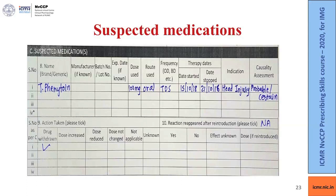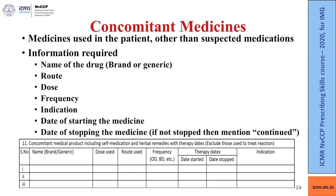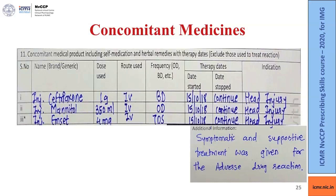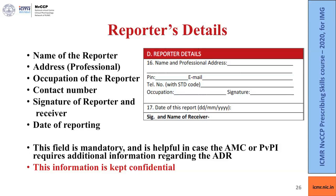Concomitant medicines are those used in the patient other than the suspected medicines. The information required for concomitant medicines is the same as for suspected medicines: name of the drug, route, dose, frequency, indication, date of starting, and date of stopping. In this case, the three concomitant medicines were ceftriaxone, mannitol, and ondansetron (referred to as M-set). All these details are filled in column 11 regarding concomitant medical products including self-medication and herbal remedies with therapy dates. We also provide additional information — in this case, symptomatic and supportive treatment was given for the adverse drug reaction.